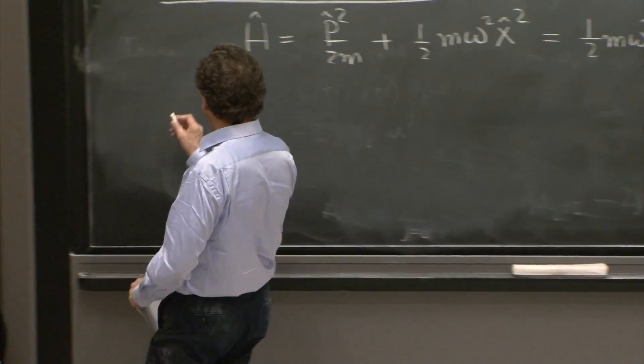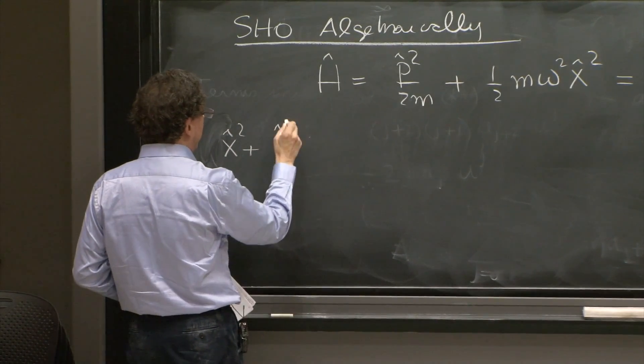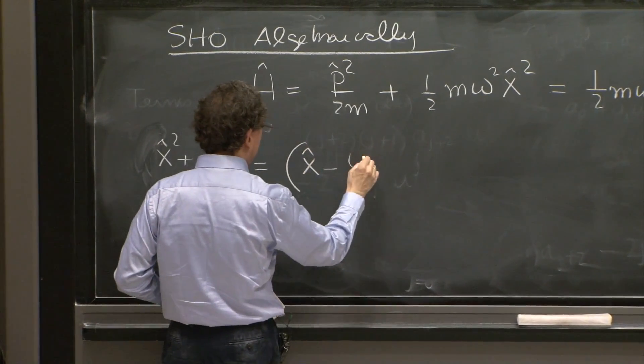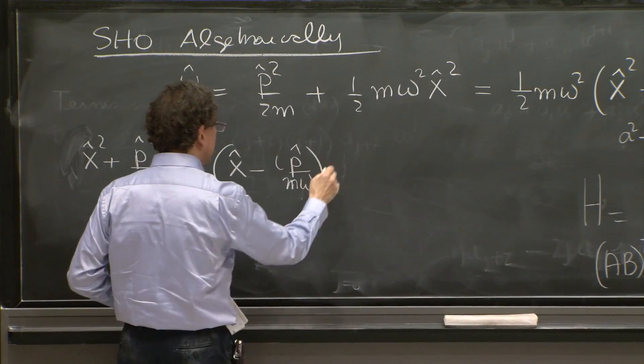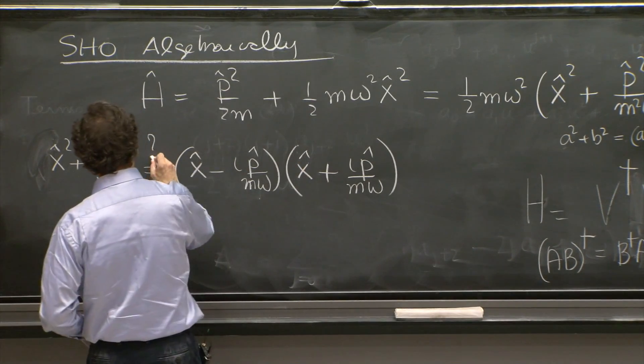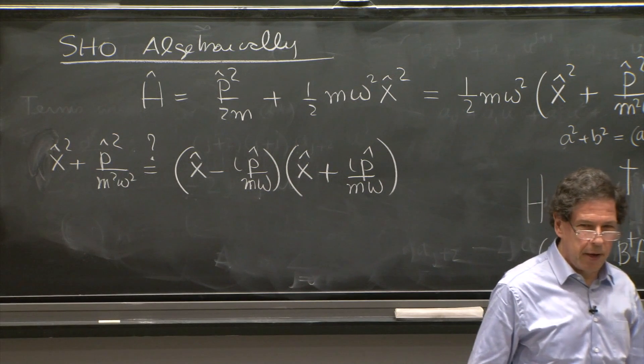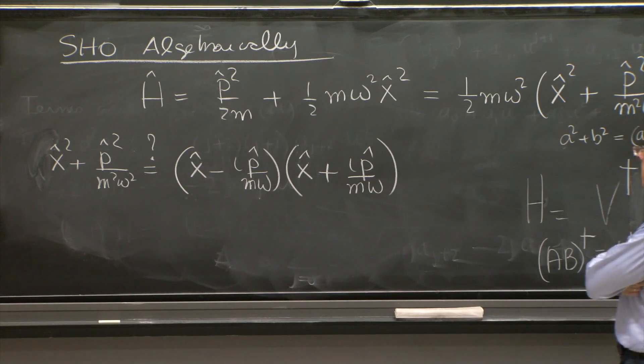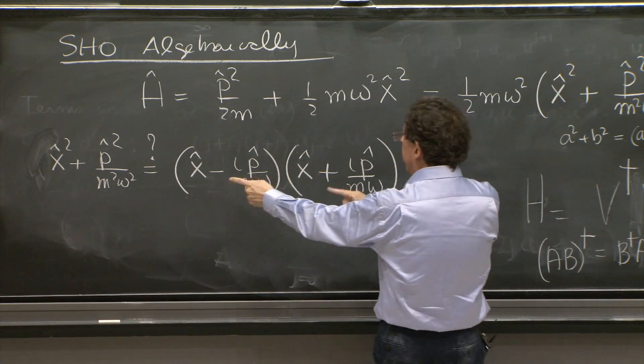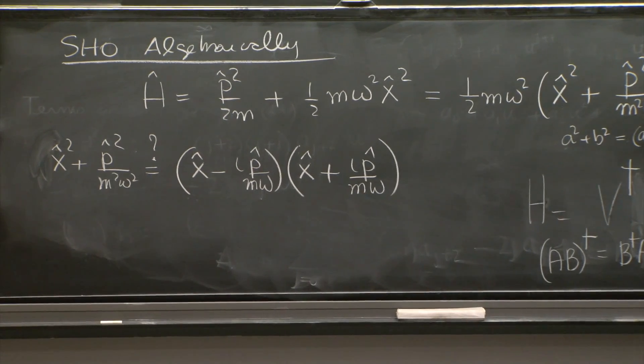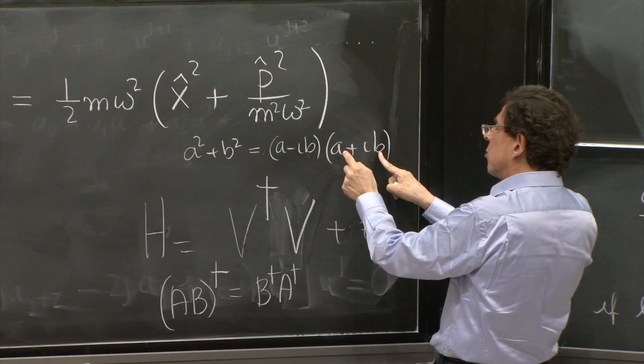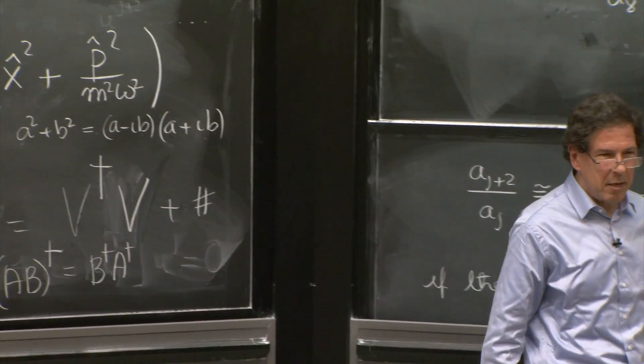I'll write it. So here we have x squared plus p squared over m squared omega squared. And I will try to write it as x minus ip hat over m omega times x plus ip hat over m omega. So let's do that. Let's put a question mark before we are so sure that this works. Well, some things work. The only danger here is that these are operators and they don't commute. And when we do this, in one case, in the cross terms, the a is to the left of b. But in the other problem, the b is to the left of a. So we may run into some trouble. This may not be exactly true.